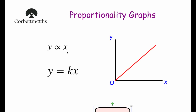So if you've got y is proportional to x, the graph that represents it would look something like this — a diagonal line through the origin going upwards. That makes sense because as x increases, y increases. As we go across to the right, y increases and the graph goes upwards. This graph represents y is directly proportional to x: a diagonal line going through the origin and upwards.